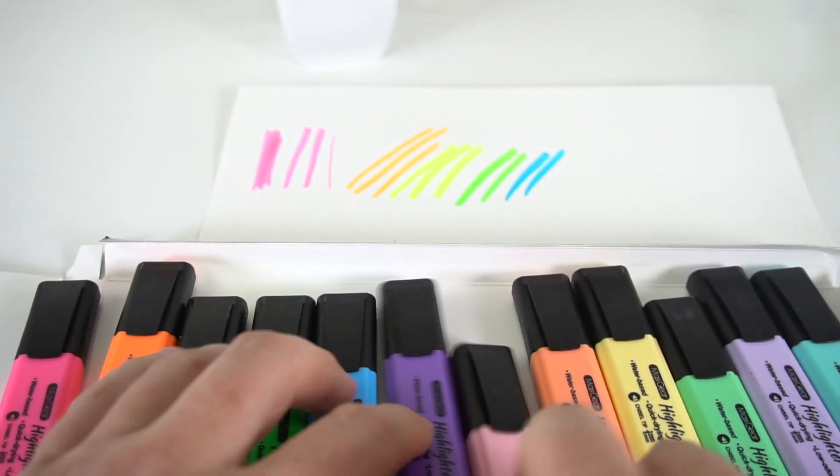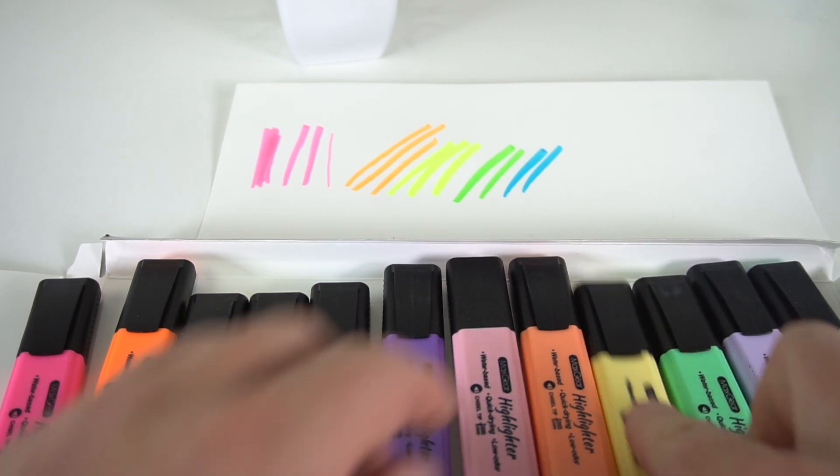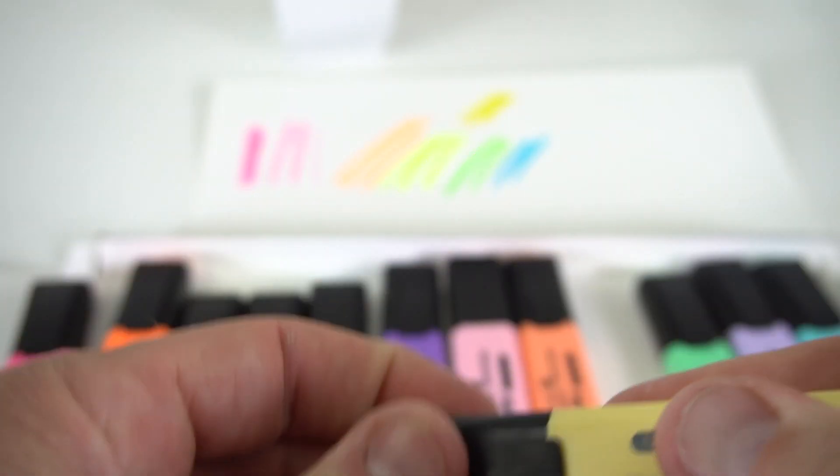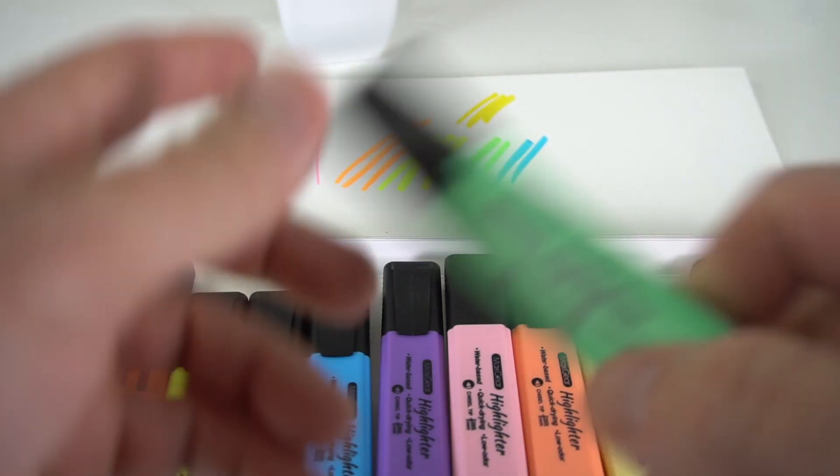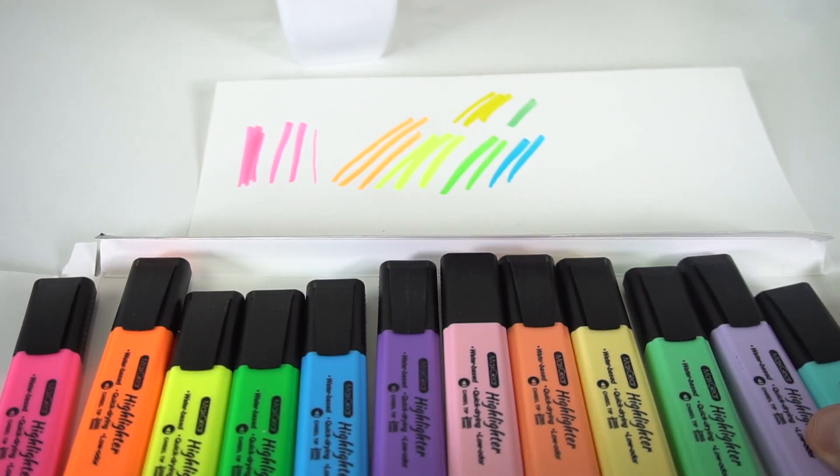And then it gets into some of these other pastel colors: purple and a light pink and a light orange and a light yellow. Let's see what this light yellow looks like compared to this one. More yellow-y than the neon-y. Okay, let's see this green one. Okay, that's more green grass.